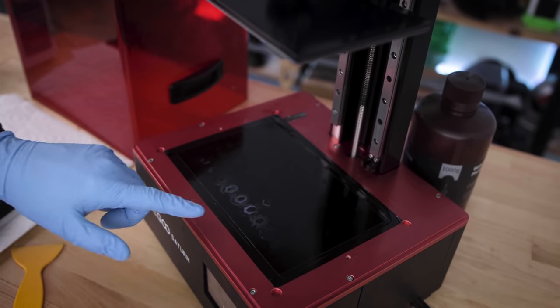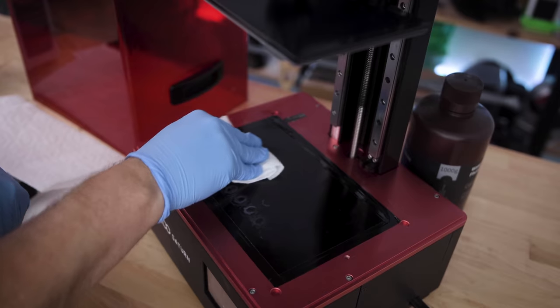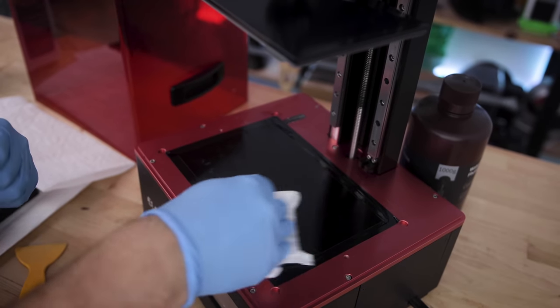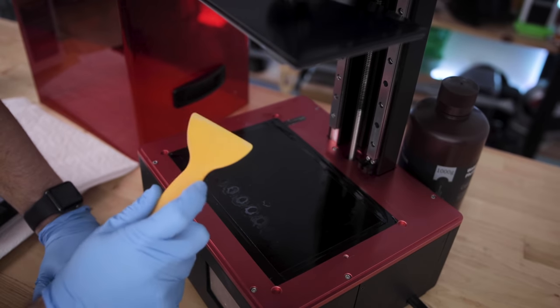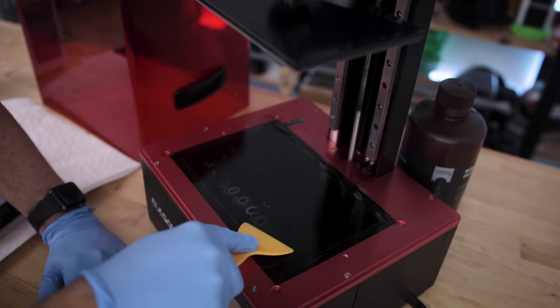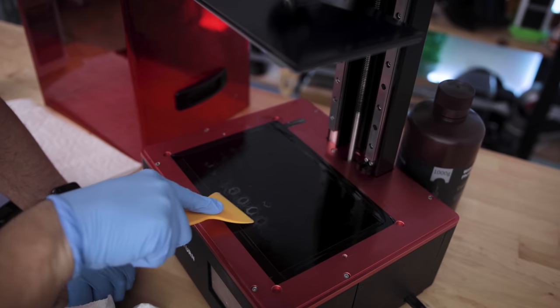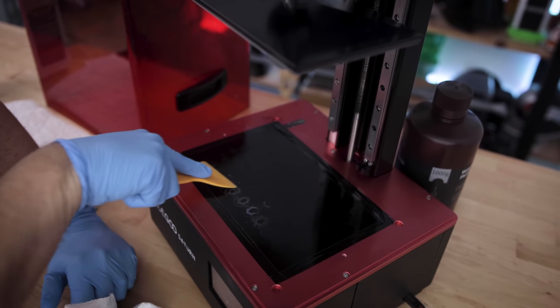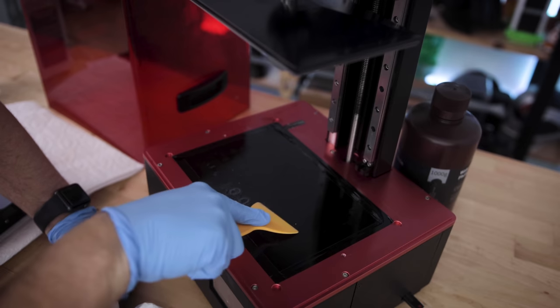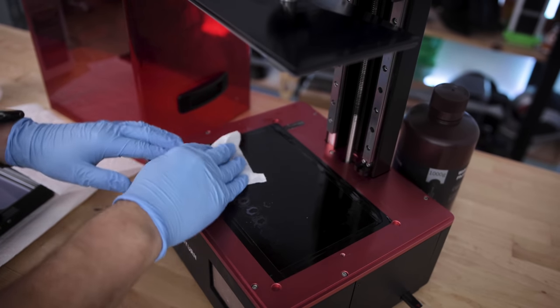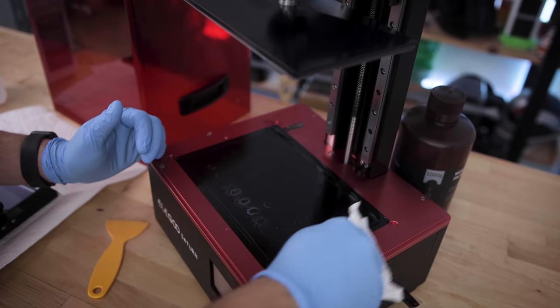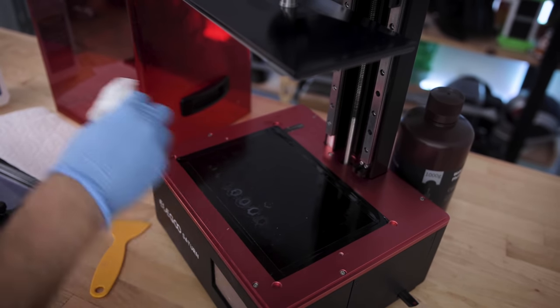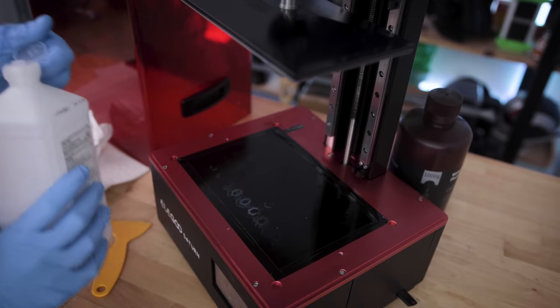You never want to use anything sharp on these screens because that will for sure destroy your screen. You're going to scratch it up and it's really going to be unusable. I'm going to try and use one of these plastic spatulas here and see if I can scrape this off. It's obviously not peeling off here. So what I'm going to do next is try to use some IPA and see if we can get that wiped up.